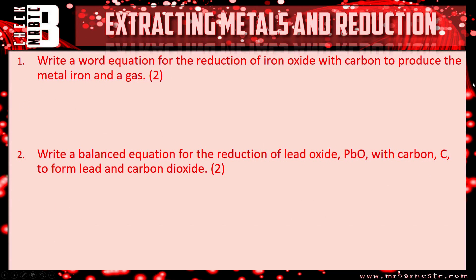Let's see how you've done. Question one: write a word equation for the reduction of iron oxide with carbon to produce the metal iron and a gas. You start with iron oxide reacting with carbon. The first product is iron, and since oxygen is being taken away from iron it has to go somewhere, so you form carbon dioxide. One mark for iron, one mark for carbon dioxide.